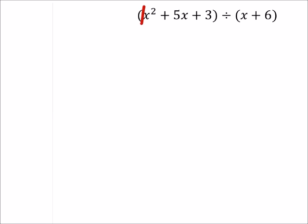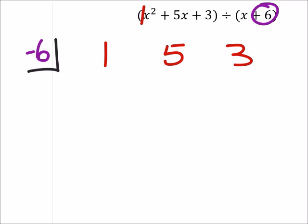I'm just going to show that coefficient of x squared is 1. And then, of course, in the box, we're going to take the opposite of that plus 6, which would be a negative 6. And then I have the coefficients 1, 5, and then the constant 3. And we've got our line here.